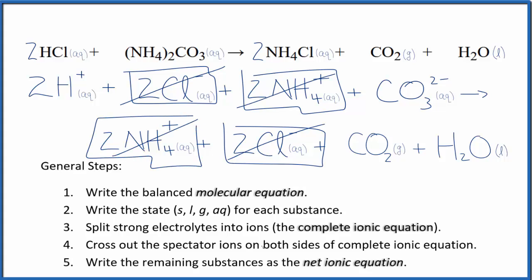What's left is the net ionic equation for HCl plus NH4)2CO3. Let's remove these spectator ions.